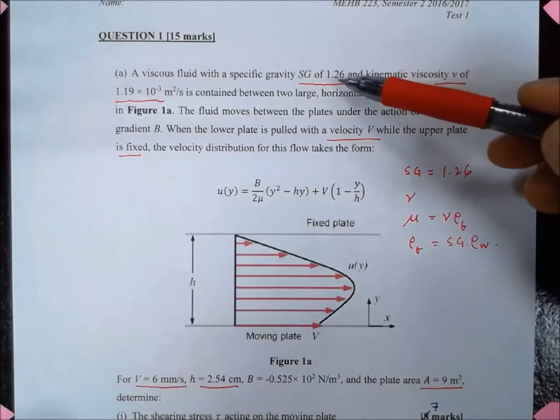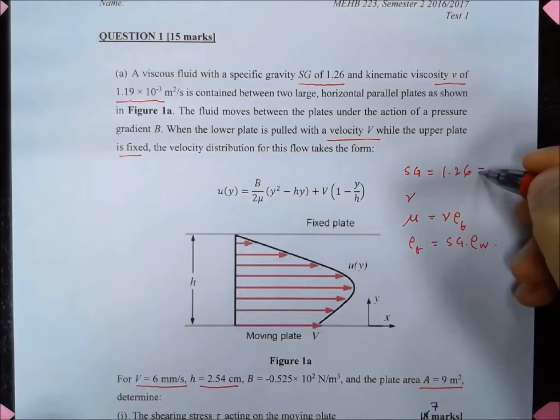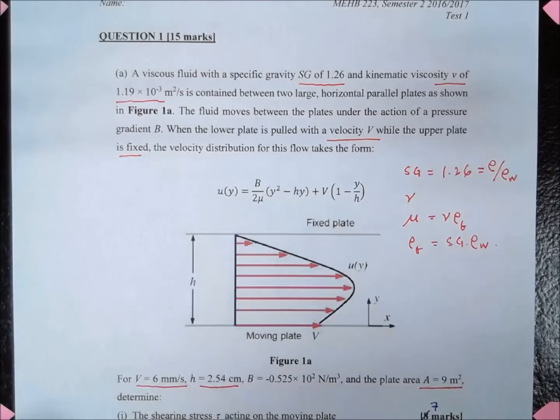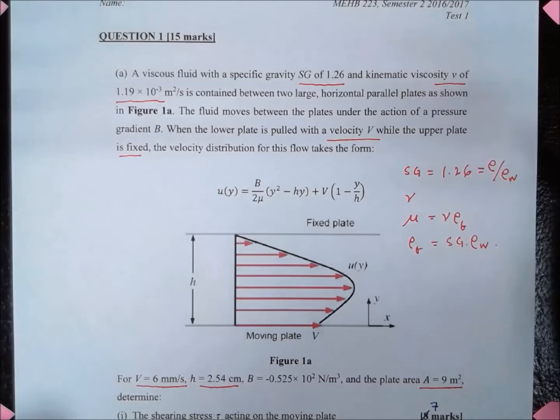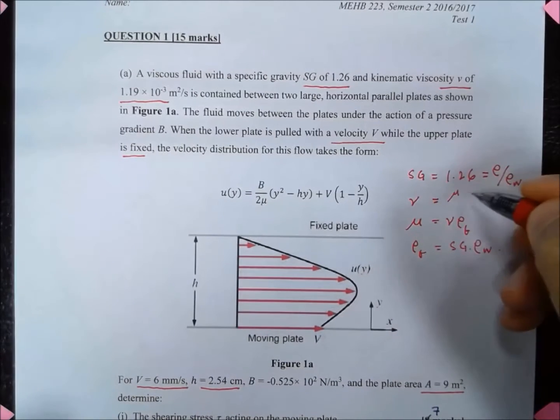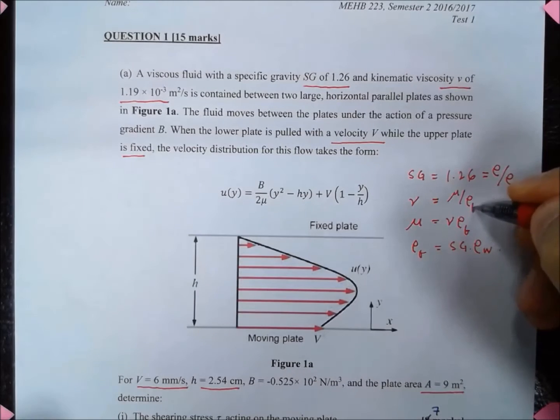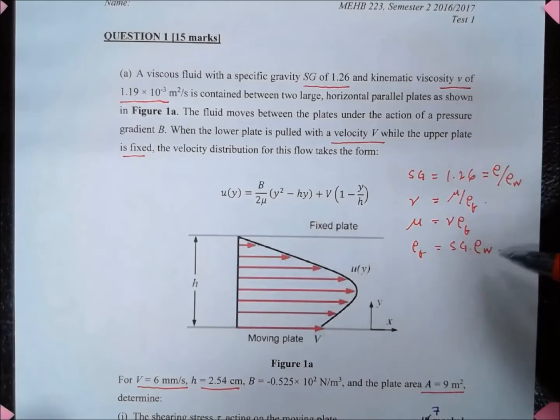Here we are given St, the specific gravity equal to 1.26, which is actually the relative density with respect to density of water. We are given the kinematic viscosity nu rather than mu, and we know that nu equals mu divided by rho. So from there we can calculate mu, which equals nu times rho fluid.